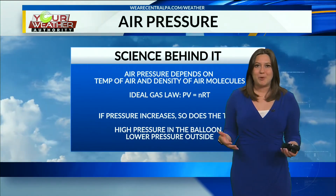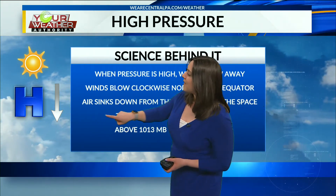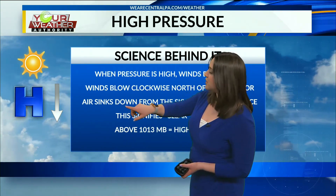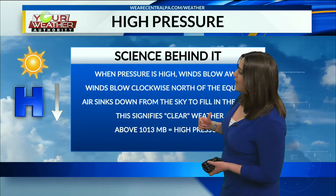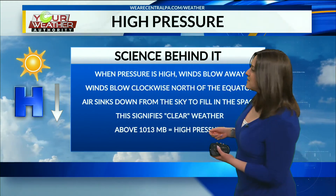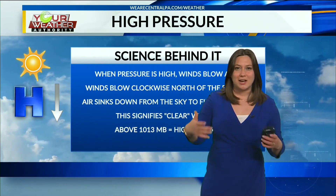Now that we've talked about high and low pressure, let's get into the science behind high pressure. When pressure is high, the winds are actually blowing away from that high pressure system. Winds blow clockwise in the northern hemisphere around a high pressure system. You might wonder why the winds don't blow in a straight line but instead curve — that has to do with the Coriolis effect, which makes the air blow in more of a circular motion. So we've got winds blowing away from the high pressure system in a clockwise motion, and as that happens, air sinks down from the atmosphere to fill in that space. High pressure is more dense compared to a low pressure system, and this signifies clear weather. Above 1013 millibars equals high pressure, and that's why we typically see sunshine — we've got air diverging out of the high creating clearer conditions.